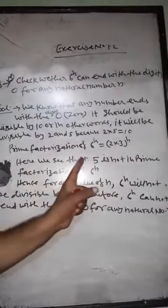Here we see that 5 is not in the prime factorization of 6 to the power n.